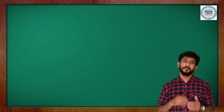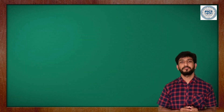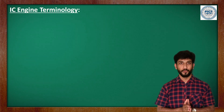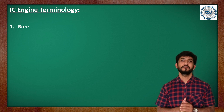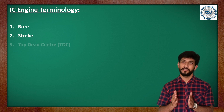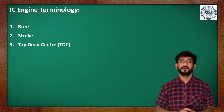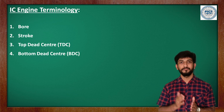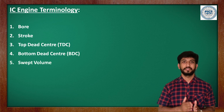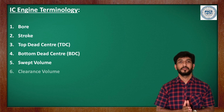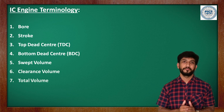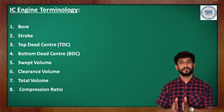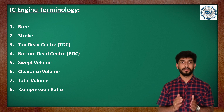Coming to the terms associated with the reciprocating type of internal combustion engine, we have: bore, stroke, top dead center (TDC), bottom dead center (BDC), swept volume, clearance volume, total volume, and compression ratio. These are the basic terms for the reciprocating type of internal combustion engine.